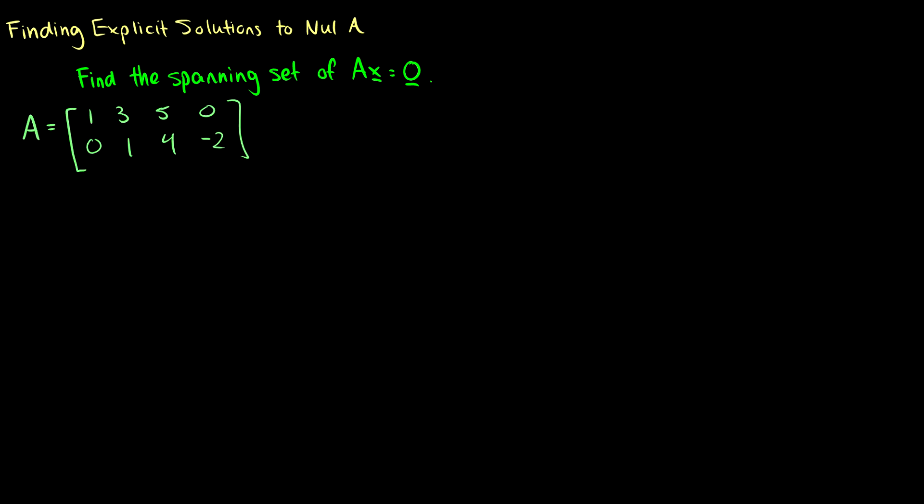What if we're asked to find explicit solutions to null(A)? For instance, find the spanning set for Ax = 0 — another way of saying find the solutions to null(A). Given matrix A, we need to reduce it to reduced row echelon form.